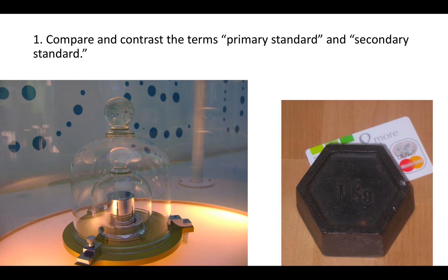Compare that with the sort of kilogram you could buy on Amazon or any store. Those are getting knocked around and chipped off all the time, so those aren't as accurate as the original kilogram. But they're copies and they let you do useful work — those copies would be secondary standards. Secondary standards are copies of the primary standard that you can use more regularly.